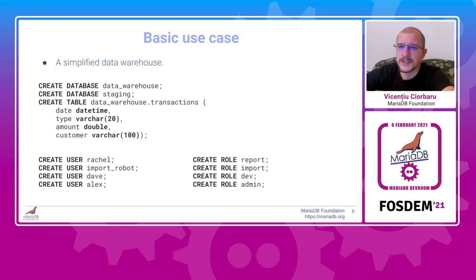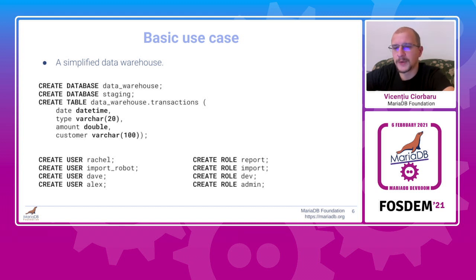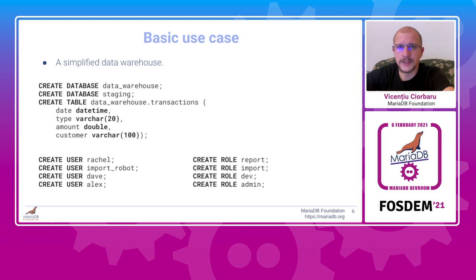To better showcase this, I like to use examples and use cases. Here we're going to take a simplified data warehouse and work with transactions. We have a number of users that want to do different tasks. Rachel is part of the reporting department, so she wants to look at data. We also have an import robot whose purpose is to import data into the database, nothing else. Then we have Dave, who is a developer, which means that Dave needs to have full access to the data warehouse databases, including the staging one. And then we have Alex, who's an admin and can do all that Dave can do, but also create other users.